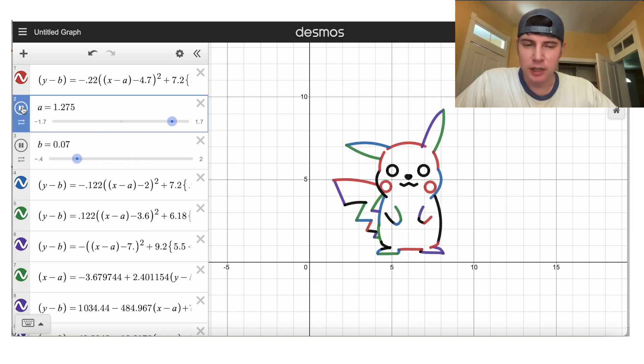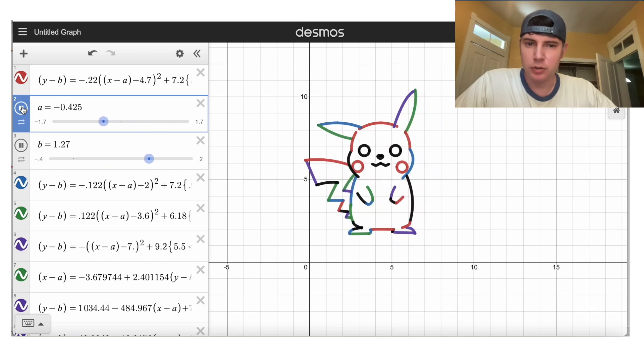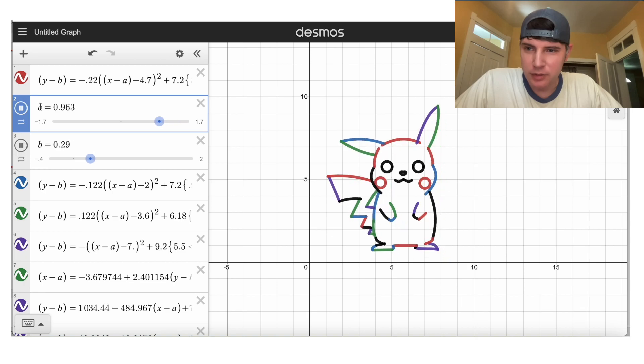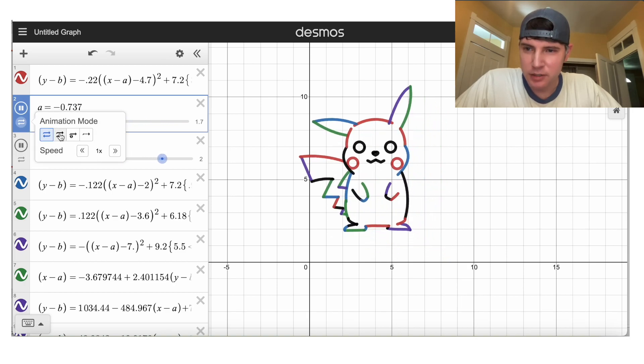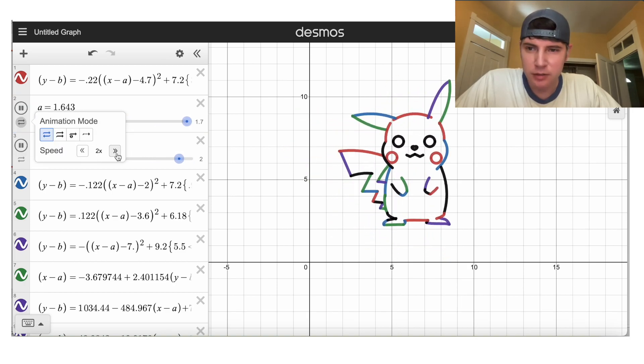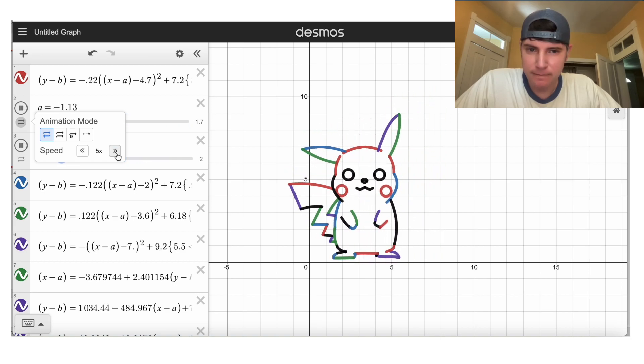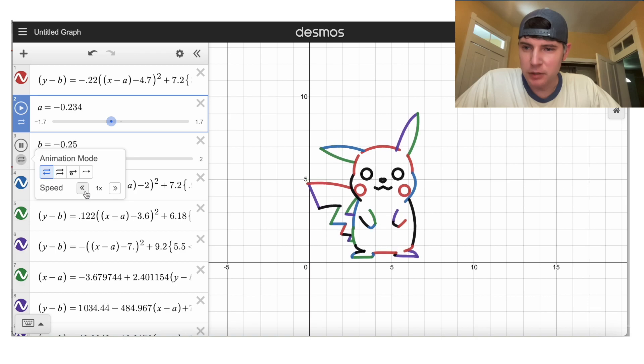Now when I hit play, he should jump. How do we make him hop? Can we speed one up? Let's speed this up. 2X.